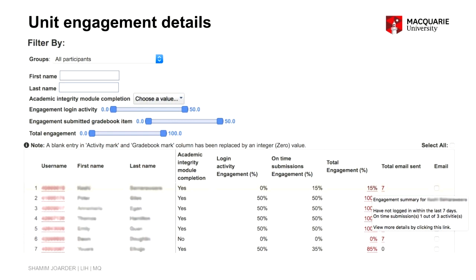The third section is unit engagement details — similar to unit engagement, but it calculates details for each individual student. You can see all students on the left-hand side, with their login activity engagement, on-time submission engagement, and total engagement. If you hover over the total engagement, it also gives useful information about that student — for example, showing they have not logged in within the last seven days and submitted only one out of three activities. This makes it easy and quick to identify which students are not engaged.